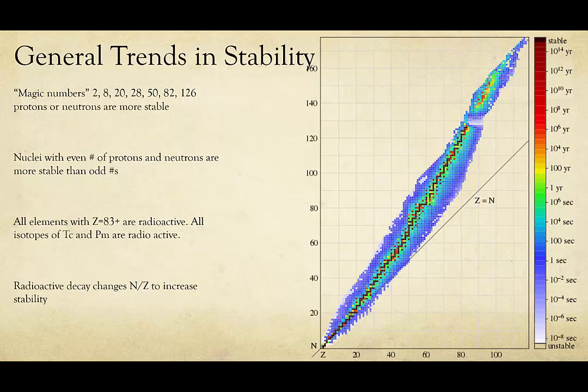Radioactive decay will occur in a way that gets the atom closer to the band of stability that you see in the chart above. This is the dark black band running through the isotopes. We'll zoom in in a minute and look at what this means for the type of radioactive decay that occurs.